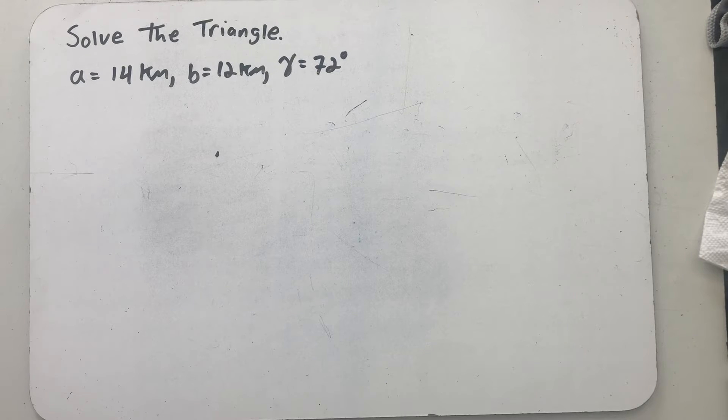We've been asked to solve the triangle. A is equal to 14 kilometers, B is equal to 12 kilometers, and gamma is equal to 72 degrees.